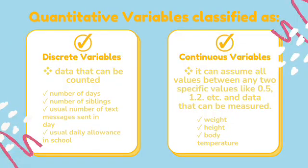Quantitative variables are classified as discrete variables and continuous variables. Discrete variables are data that can be counted — for example, number of days, number of siblings, usual number of text messages sent in a day, and usual daily allowance in school. Continuous variables can assume all values between any two specific values like 0.5, 1.2, and so on — data that can be measured. Examples include weight, height, and body temperature.